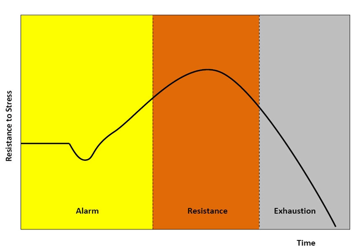The term stress had none of its contemporary connotations before the 1920s. It is a form of the Middle English destress, derived via Old French from the Latin stringere. The word had long been in use in physics to refer to the internal distribution of a force exerted on a material body, resulting in strain. In the 1920s and 30s, biological and psychological circles occasionally used the term to refer to a mental strain or to a harmful environmental agent that could cause illness.